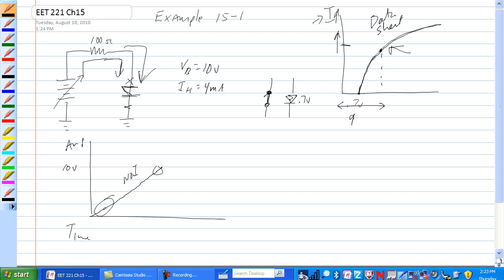So voltage increases, increases, increases until we get to the 10 volts. This Shockley diode begins to conduct. And when it begins to conduct, we end up with the 0.7 volts across it.